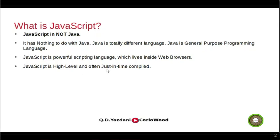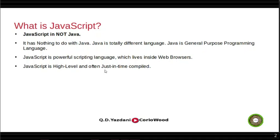JavaScript is high-level and often just-in-time compiled. High-level means it's far from the hardware — there's low-level like assembly and C, then medium like C++ and Java, then high-level like HTML and JavaScript, which live inside the web browser. Just-in-time compiled means as soon as you write your code it gets compiled immediately — it doesn't wait. It's an interpreted language that doesn't produce machine code like C++.